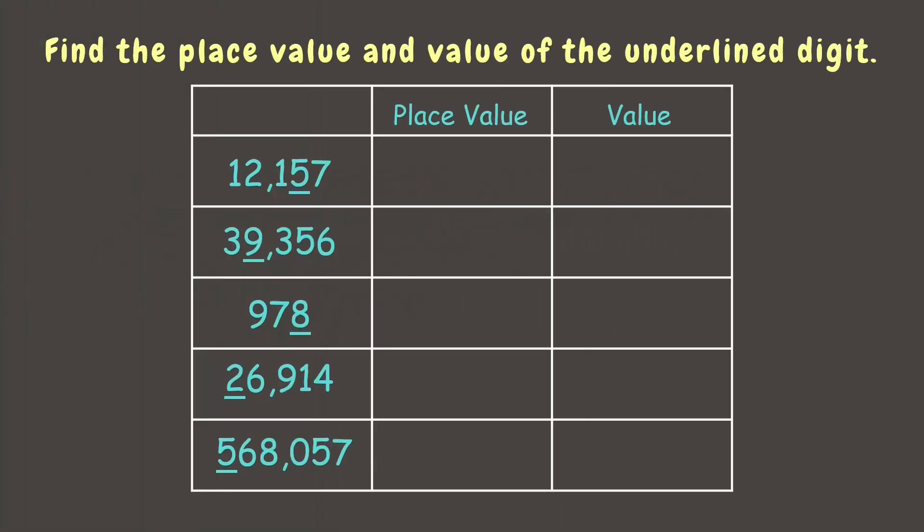Great job! Now let's level up a bit. You may pause this video and answer this activity on a piece of paper. What you need to do is find the place value and value of the underlined digit. For the first one, the underlined digit is five, and it is in the tens place, which gives us the value 50.